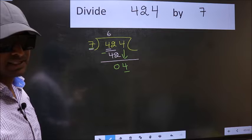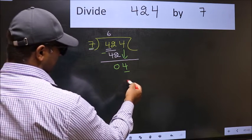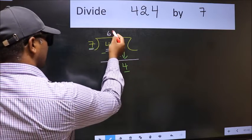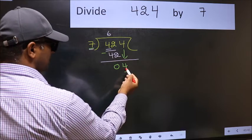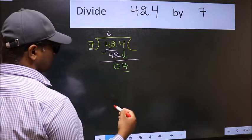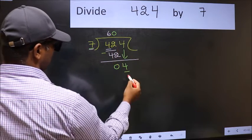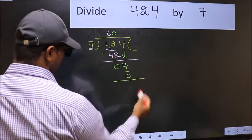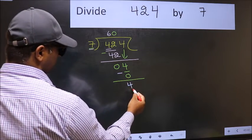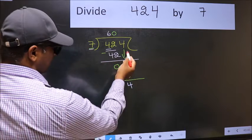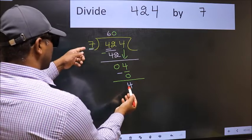When you bring 4 down, instead, you should think what number should we take here. If I write 1, I will get 7. But 7 is larger than 4, so we should take 0. 7 times 0 equals 0. Now you should subtract: 4 minus 0 equals 4. Over here we did not bring any number down, and 4 is smaller than 7.